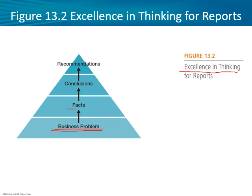Then the facts about the problem are really specific things — statistics, numbers, what other hotel chains are offering green meetings, how much it costs to implement these plans, and what different ways you could be eco-friendly. From those come conclusions, and then all the way up to specific recommendations. Maybe you conclude the costs are too high and it wouldn't benefit this hotel chain, or your recommendation might be full steam ahead.